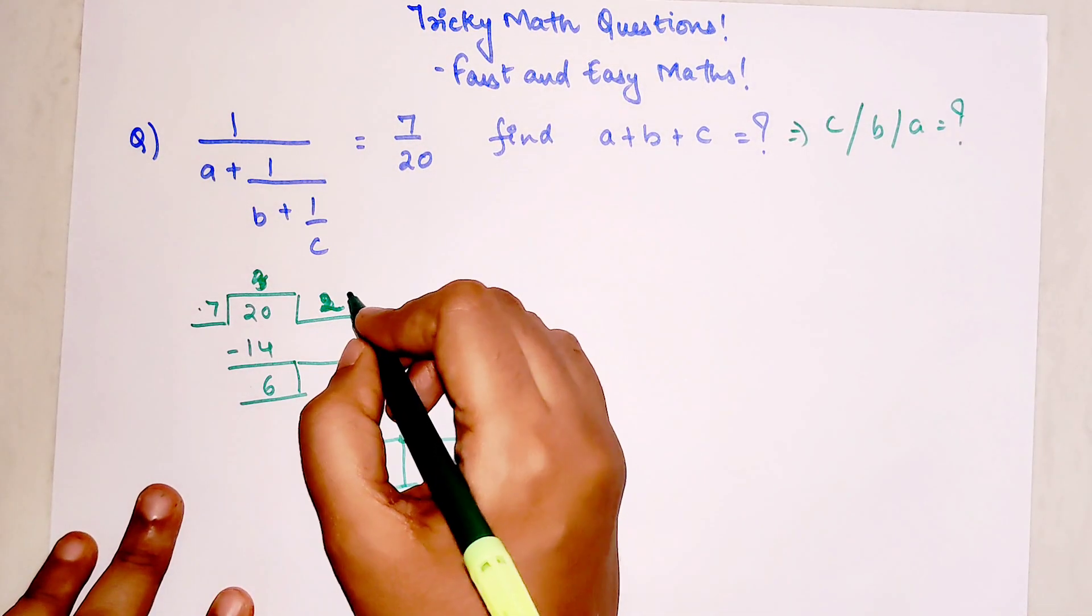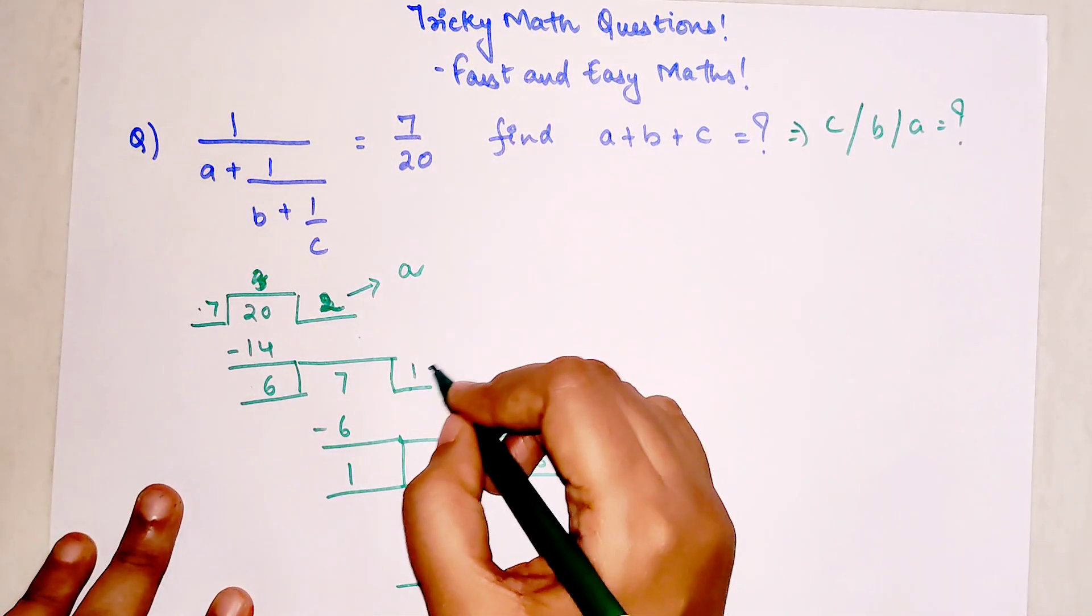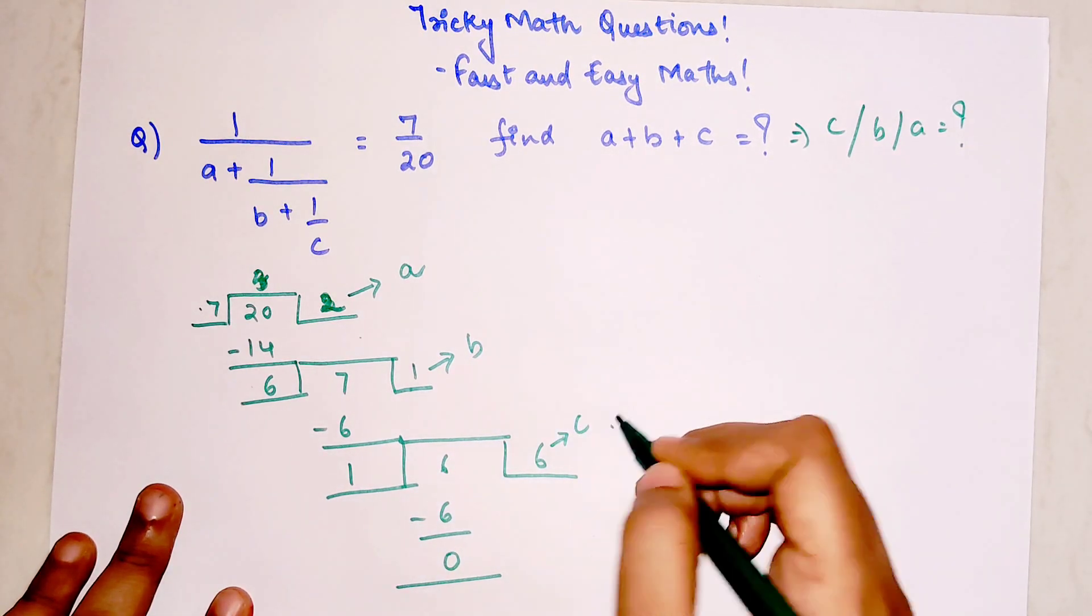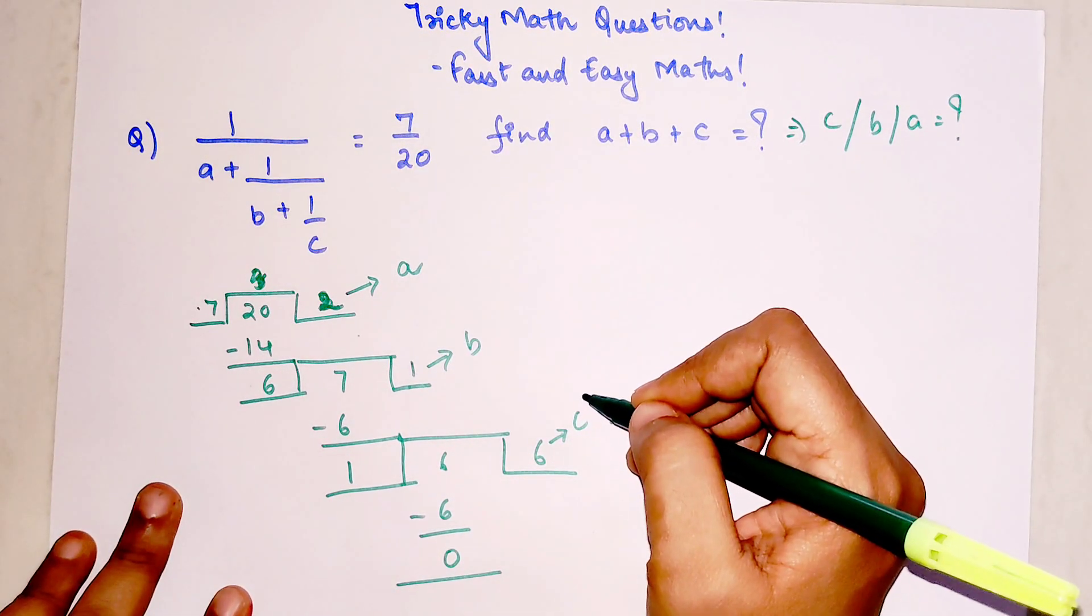So basically here I can say this is the value of A, this is the value of B, and this is the value of C. So the final answer for this one will be...